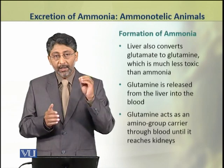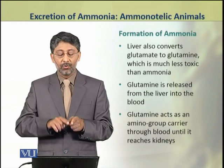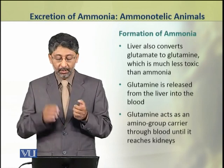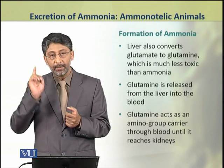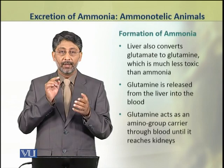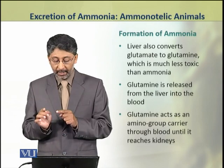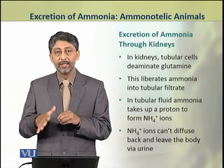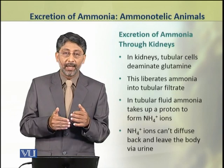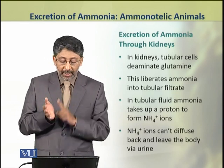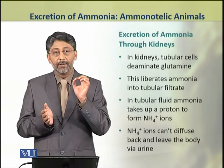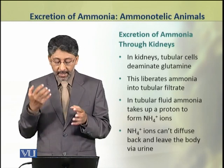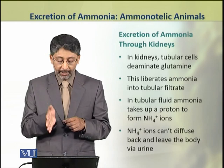The liver also converts glutamate to glutamine, which is much less toxic than ammonia. Glutamine is released from the liver into the blood and acts as an amino group carrier through the blood and tissues until it reaches the kidneys. In the kidneys, tubular cells deaminate this glutamine, liberating ammonia into the tubular filtrate. In the tubular fluid, ammonia takes up a proton to form ammonium ions.